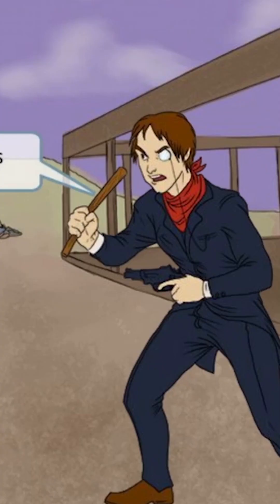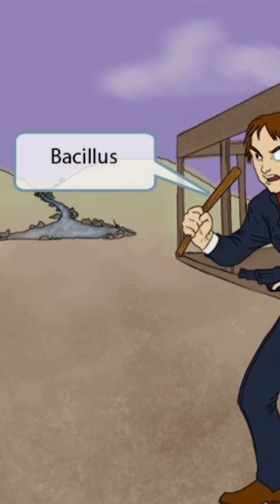Also notice that the guy has a gun in one hand and a bat or a rod in the other. This is to help you remember that Listeria is a bacillus, so it's shaped like a rod.